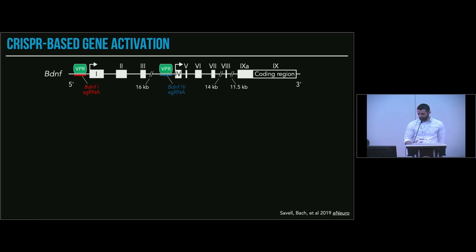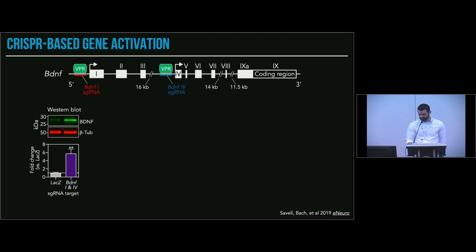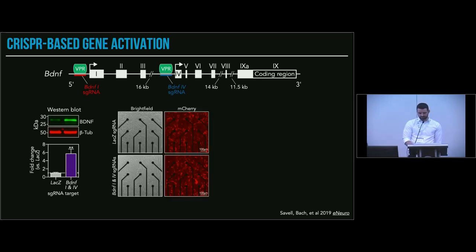If we co-regulate, this system is very amenable to multiplexing. If we co-regulate both BDNF one and BDNF four, which actually commonly occurs in neurons—these variants tend to go up together after neuronal stimulation or plasticity-inducing stimuli—we find that there's an increase in BDNF protein, about a six-fold increase. We wanted to use this to ask what these specific transcript variants do in the context of neuronal function.